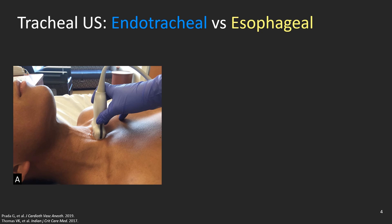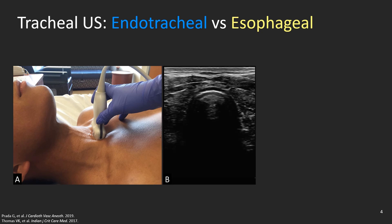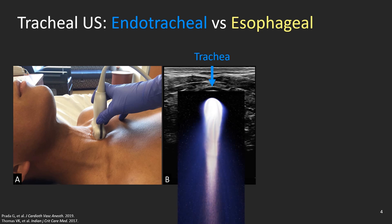Under normal circumstances, say before intubation, this is the image you should get. This curved bright image is the anterior aspect of the trachea with a posterior shadow that extends down to the end of the screen due to the air inside the tracheal lumen. This is called the single comet tail artifact. And in case you're part of the 99% of humans who have never seen a comet in real life, here is a picture of one while we keep waiting for Halley's.